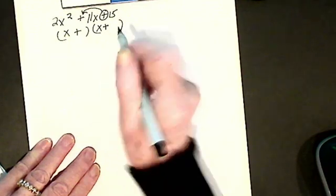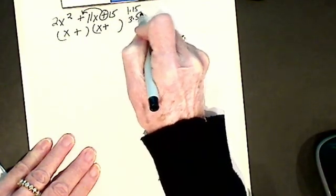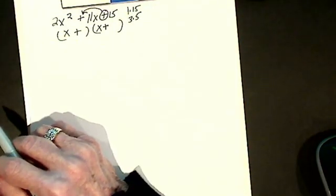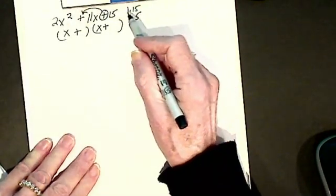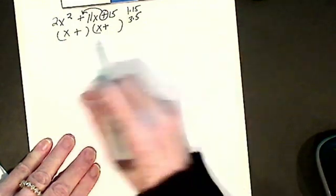I write down my factors of 15, 1 times 15, 3 times 5. So now if I did it like the other type, without a coefficient there, I would say which factor pair do I add or subtract to get an 11, I have a problem, there is no 11. And the fact that I have a 2 here changes everything.